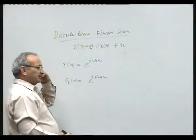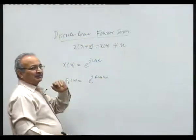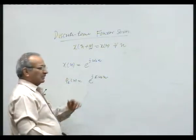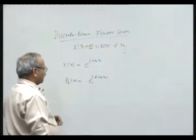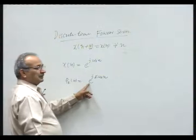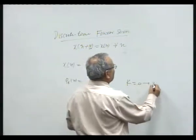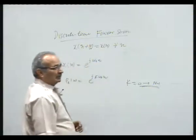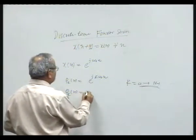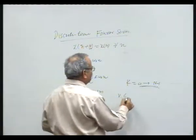Because the period is 2π/ω₀, that is why it is a harmonically related complex exponential set. Now, these functions are not distinct for all k — they are distinct only in the range k equal to 0 to N minus 1. Thereafter, they repeat. That means φ_k[n] is the same as φ_(k+rN)[n], where r belongs to the integer set.